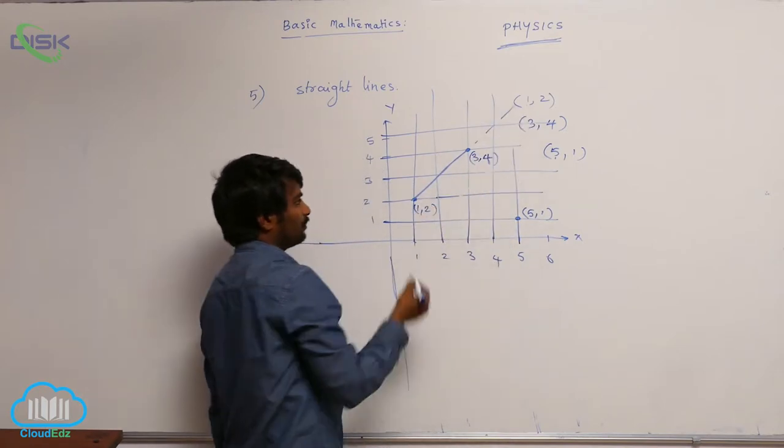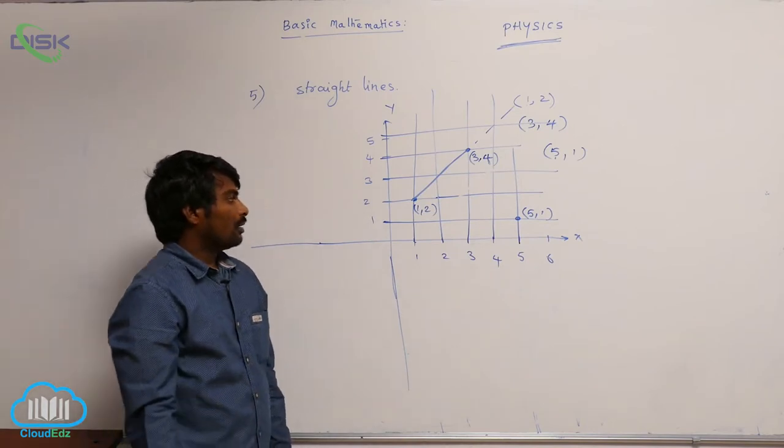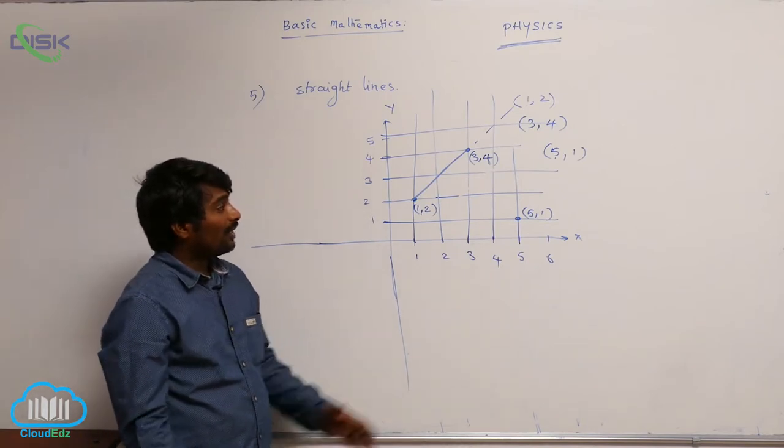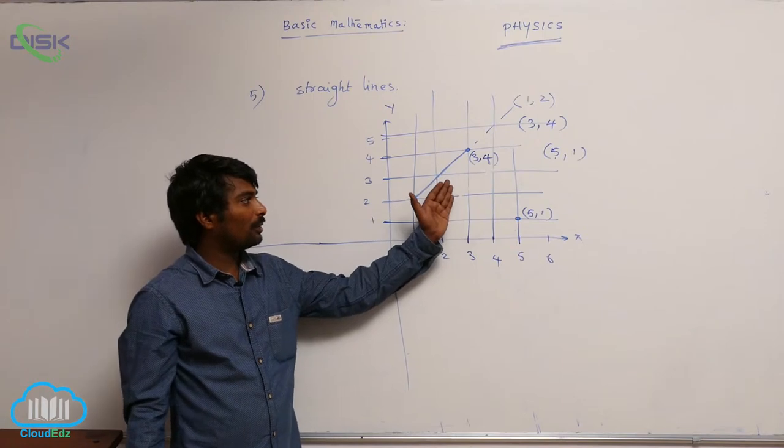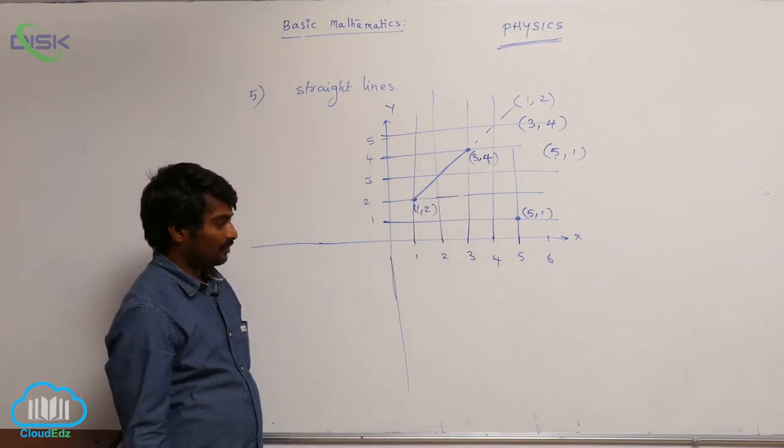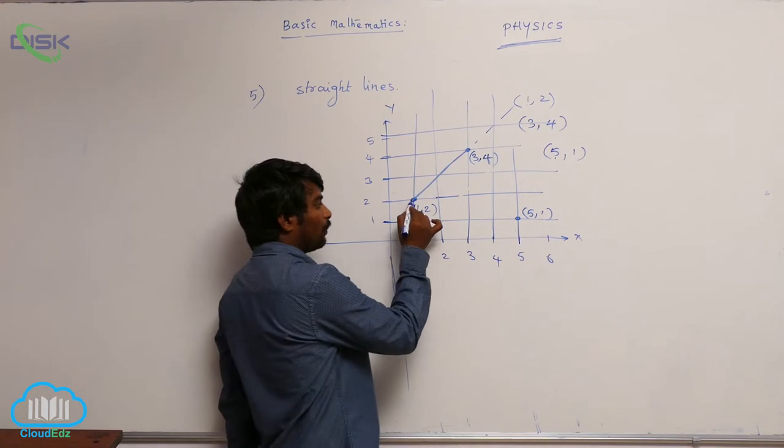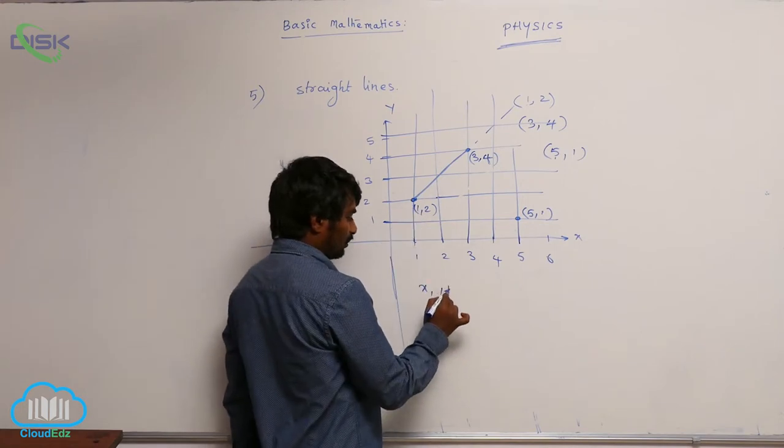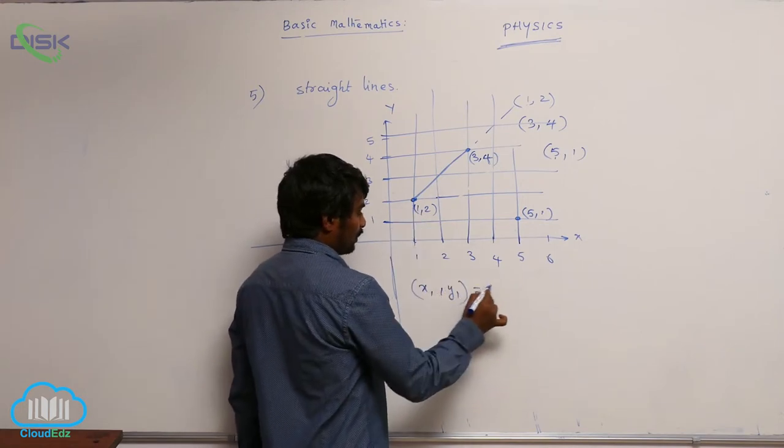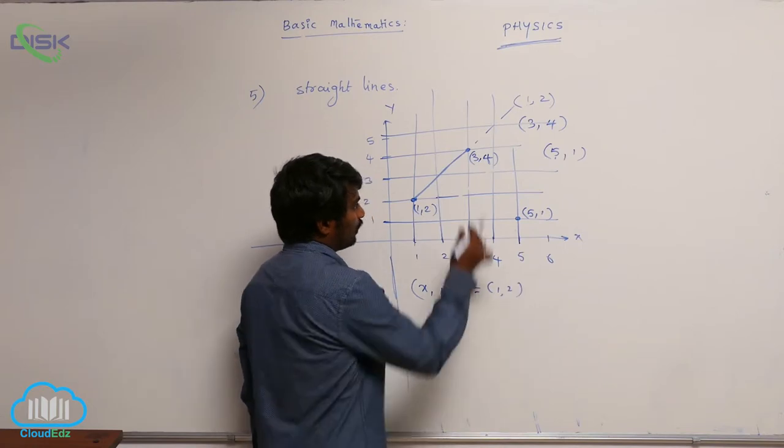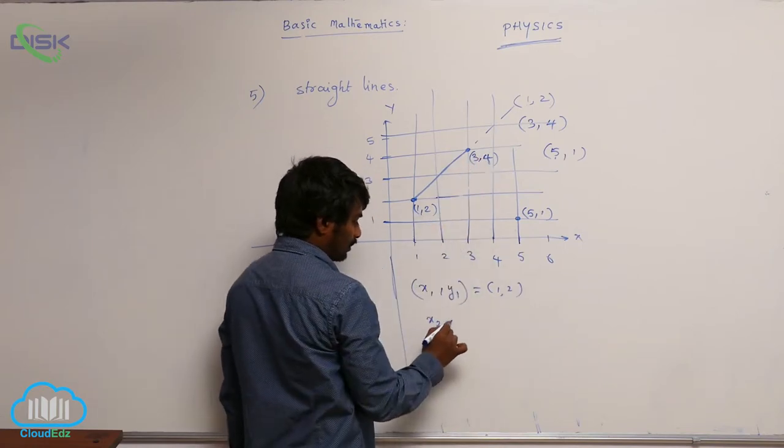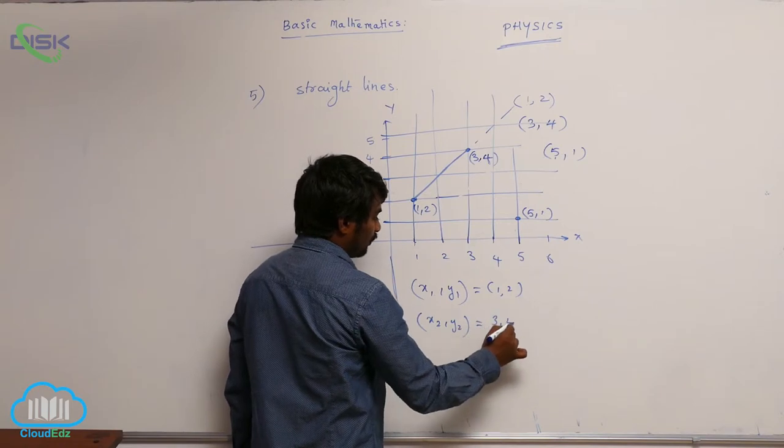So straight line you can extend. I want to calculate the slope of this straight line. What you have done? You have taken one point as (x1, y1) that is equal to (1, 2) and another point (x2, y2) that is equal to (3, 4).